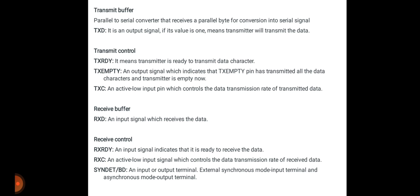The receiver buffer block acts as a buffer for received data. The RxD pin is an input signal which receives data from the receiver. The receiver control block controls the receiving of data. It includes three pins: RxRDY — an input signal indicating readiness to receive data; RxC — an active-low input signal which controls the data transmission rate of received data; and the SYNDET/BD pin — an input/output terminal that functions as an external synchronous mode input or asynchronous mode output terminal.